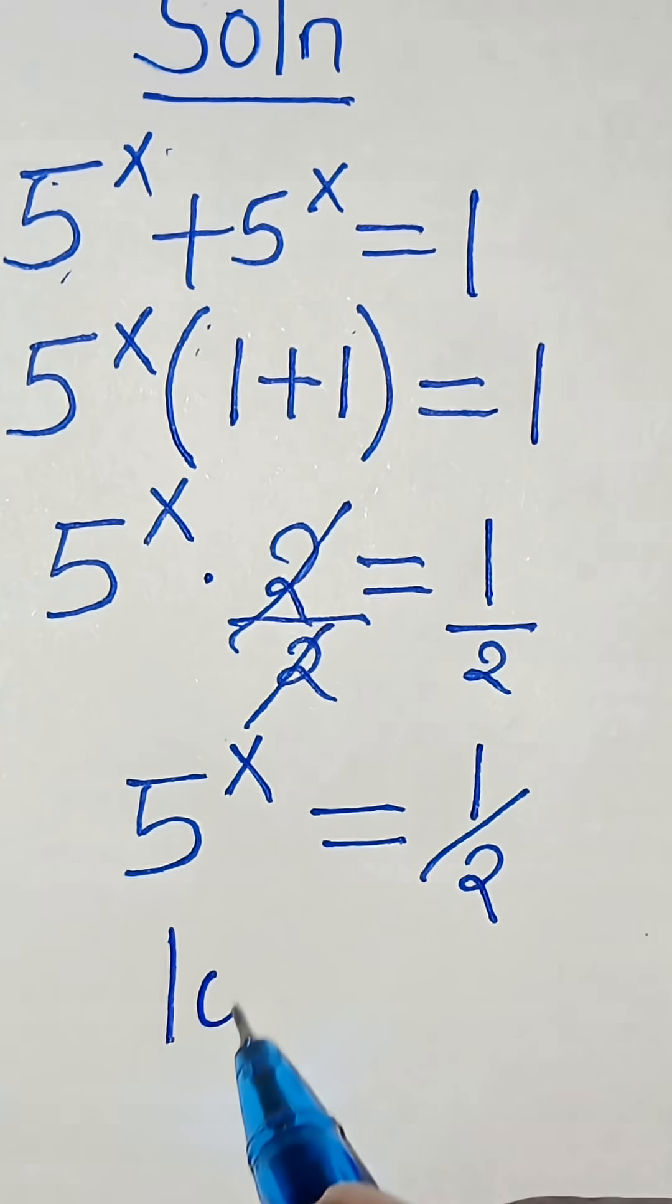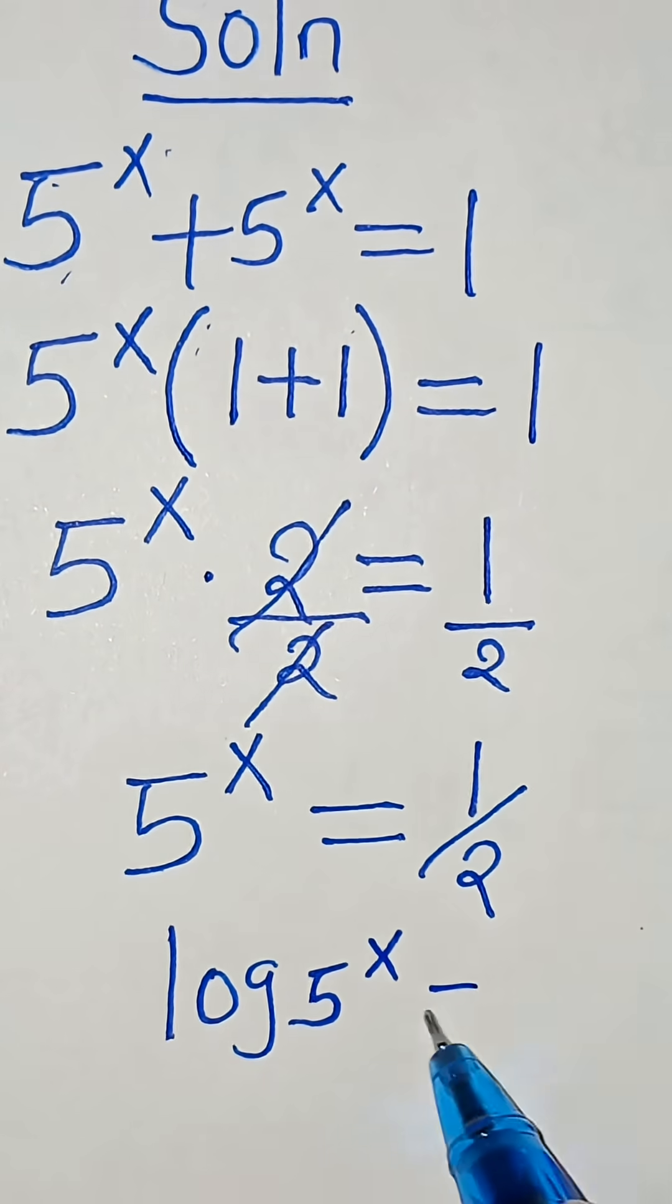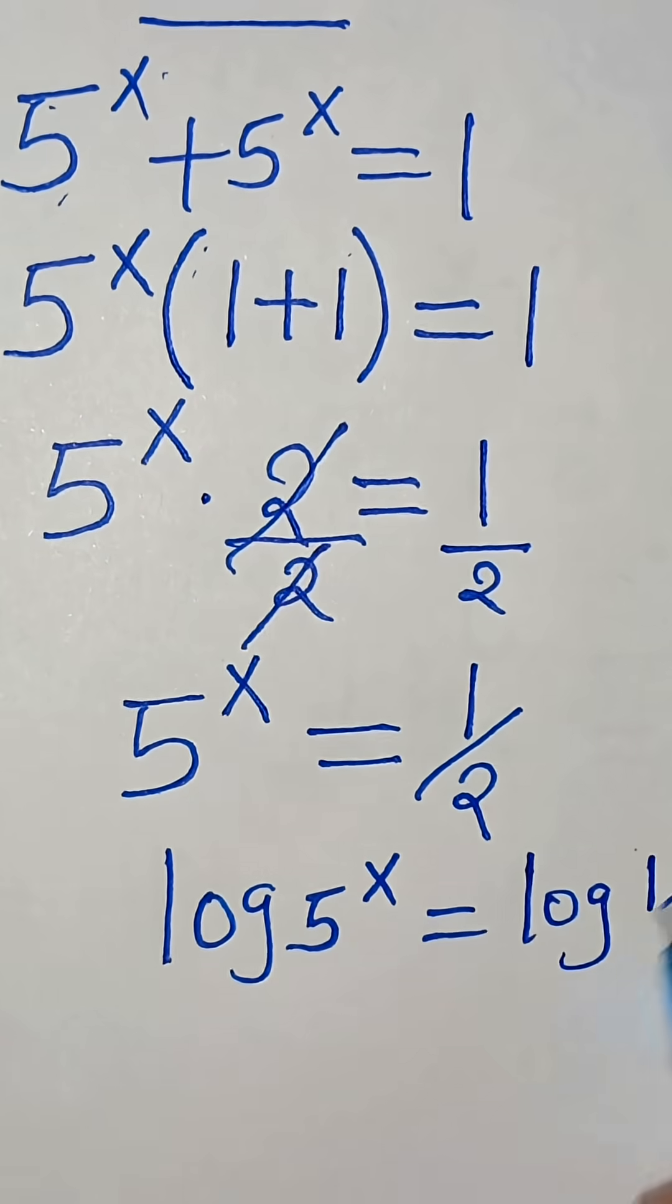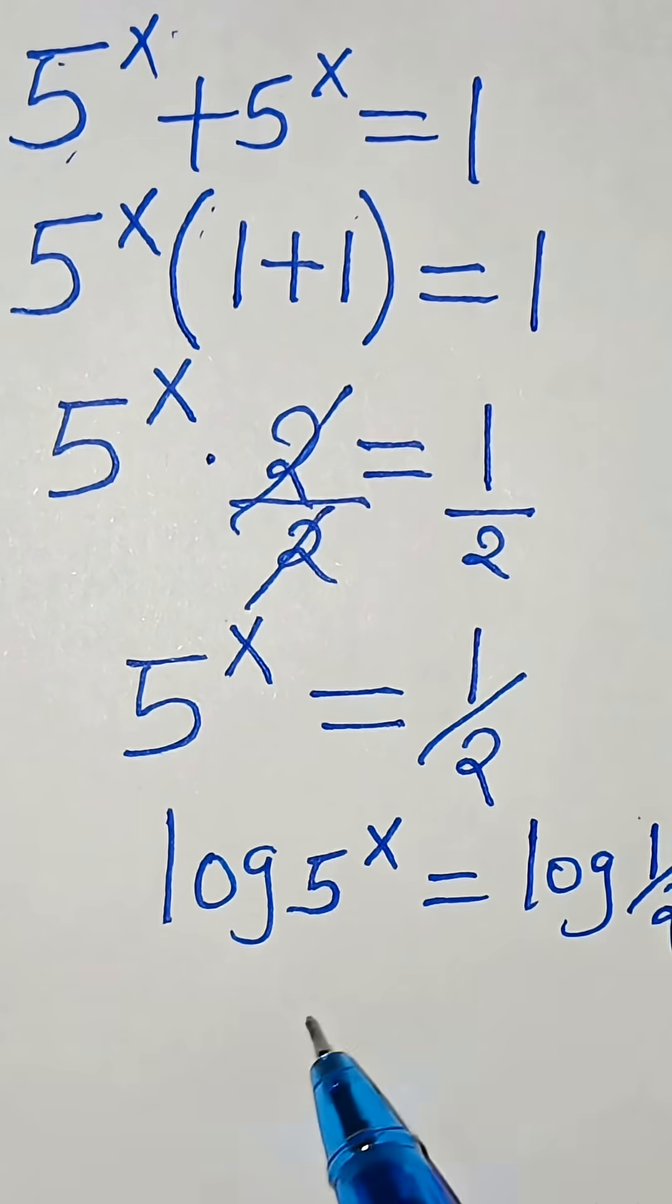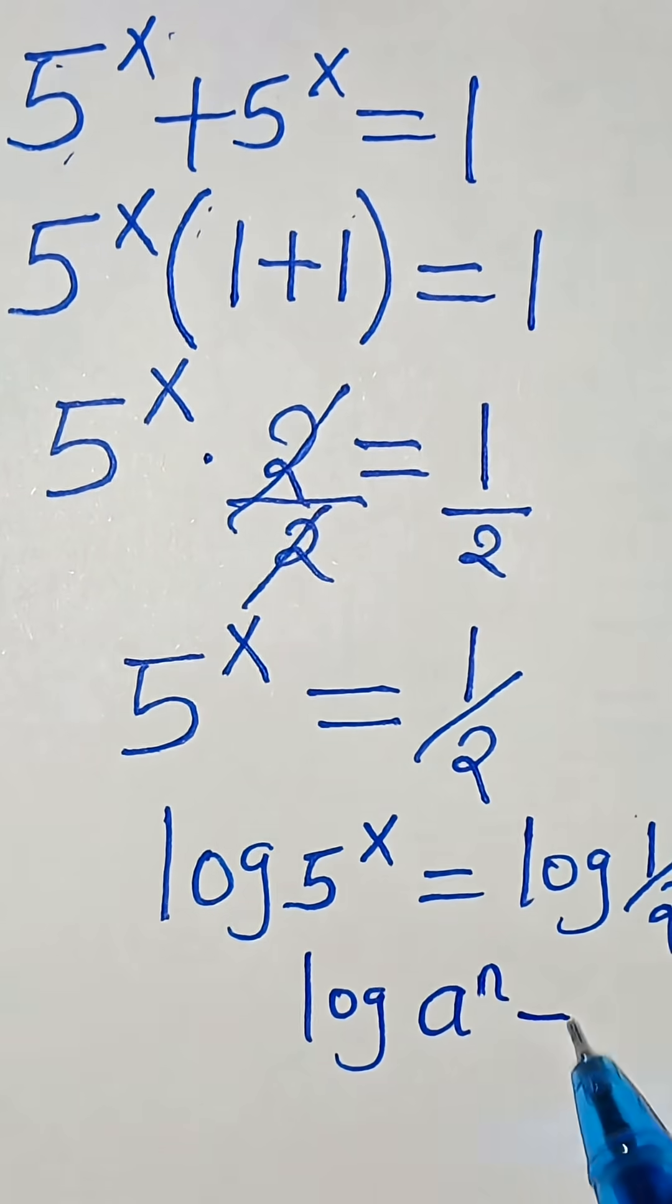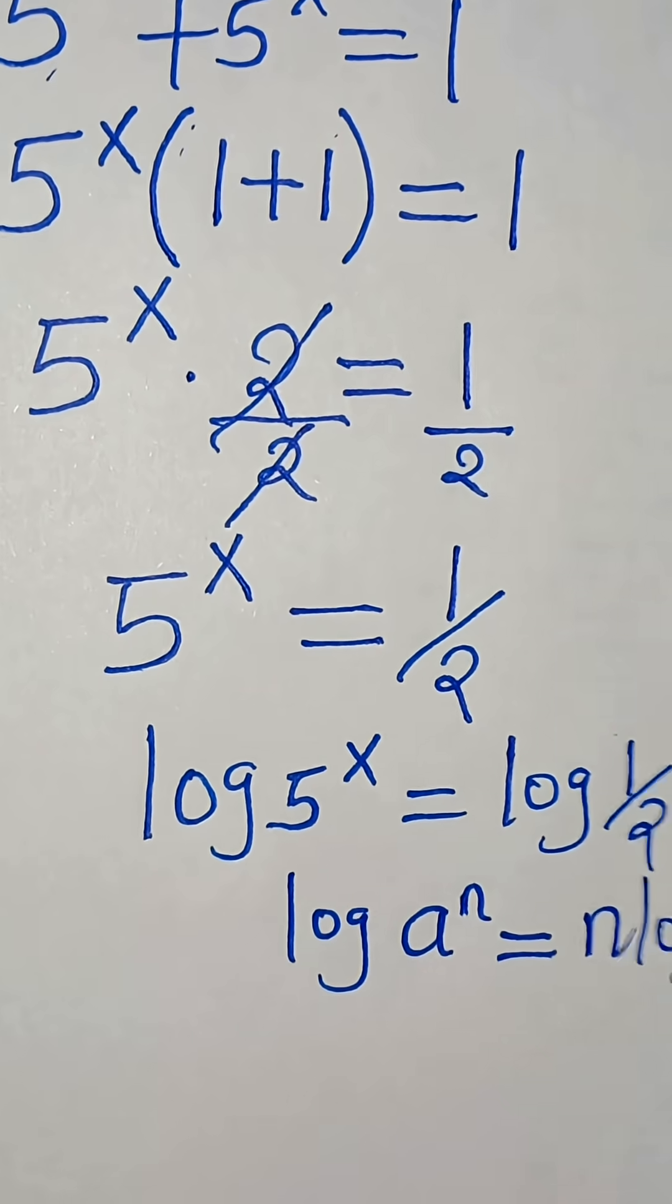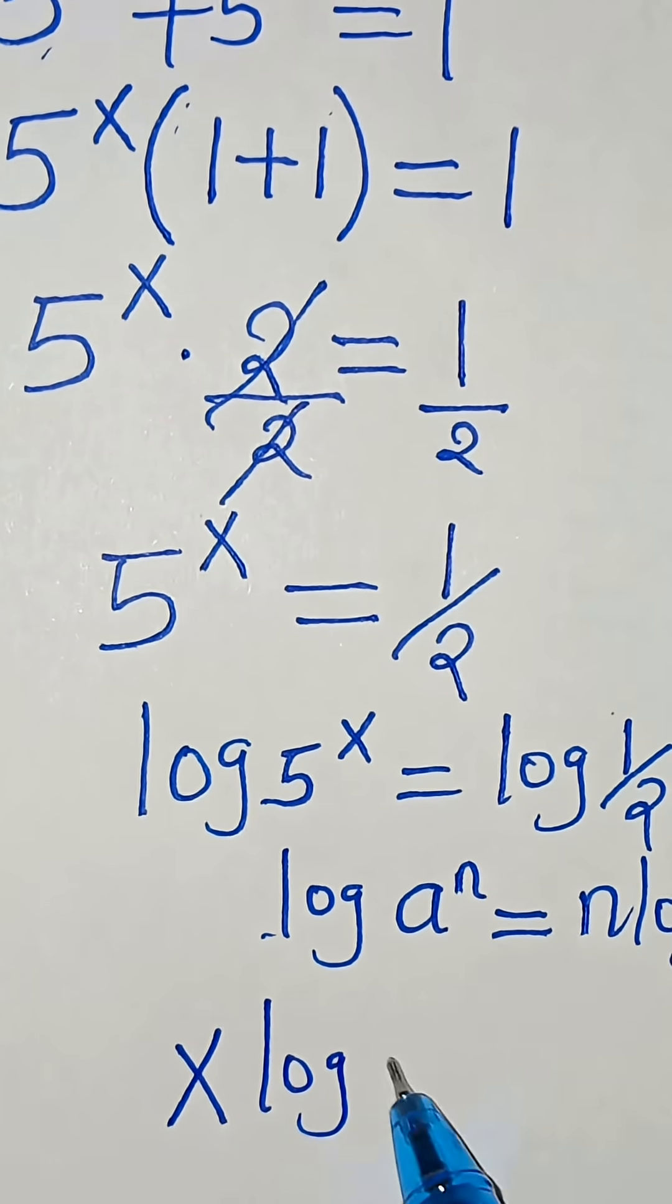To solve for x here, we introduce logarithm. We have log 5 to the power of x, this is equal to log 1 over 2. Log 5 to the power of x is in the form of log a to the power of n, which can be expressed as n log a.